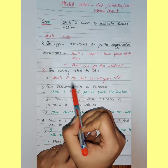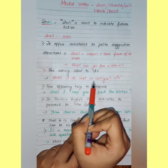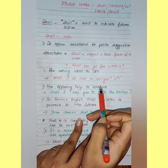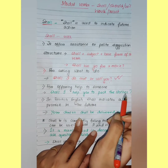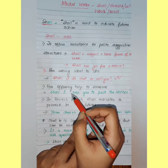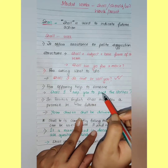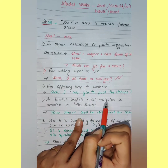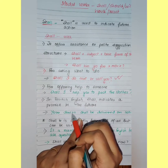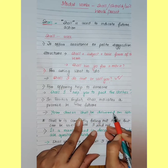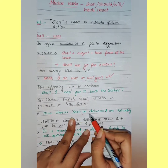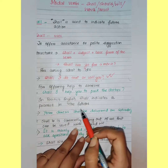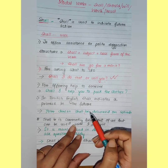The next use of 'shall' is for asking what to do: 'Shall I do that or will you?' — you're asking someone whether to do something or whether that person will do it. The third use is for offering help: 'Shall I help you to pack the clothes?' In British English, 'shall' also indicates a promise in the future, for example: 'Your dress shall be delivered on Saturday.'